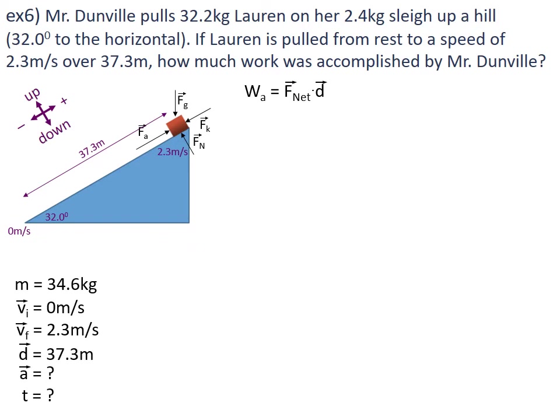We have to do a substitution: F-net equals mass times acceleration, so work_acceleration equals m·a·d. We said we don't know acceleration, so that's going to be a problem — we're going to have to solve for acceleration before we move on. Looking at our kinematics formulas, the route I'm going to take is using VF² = VI² + 2ad.